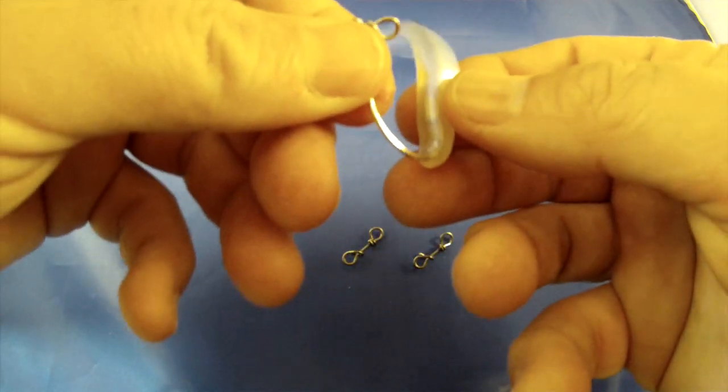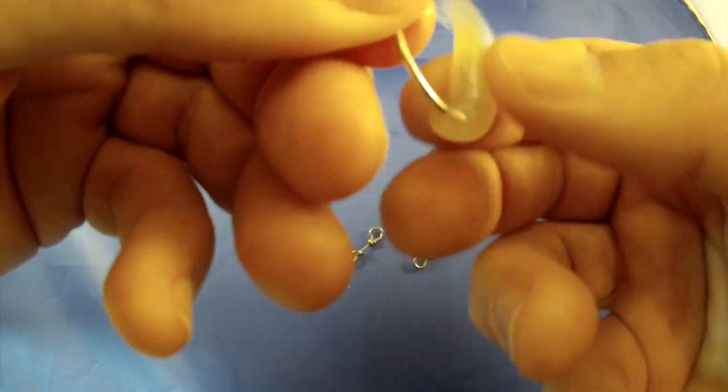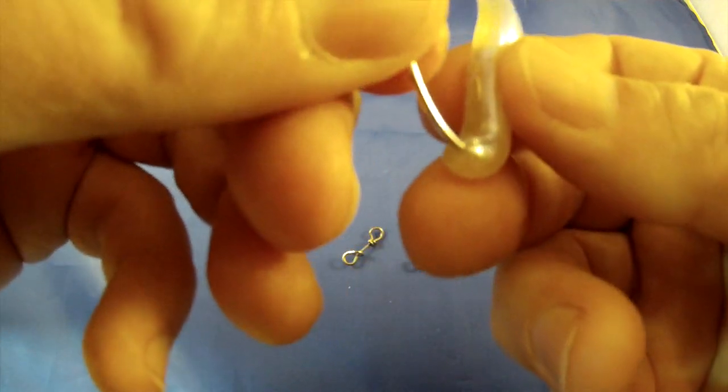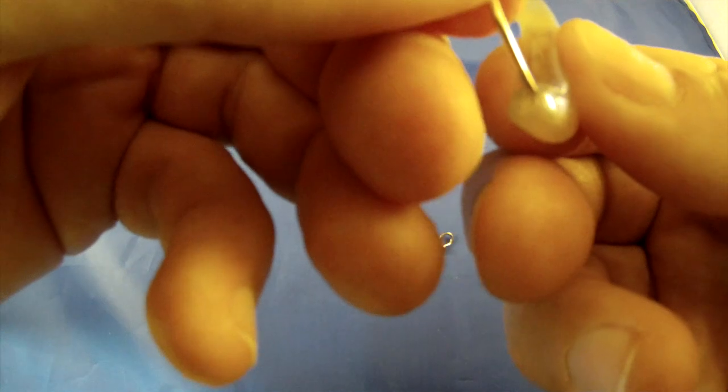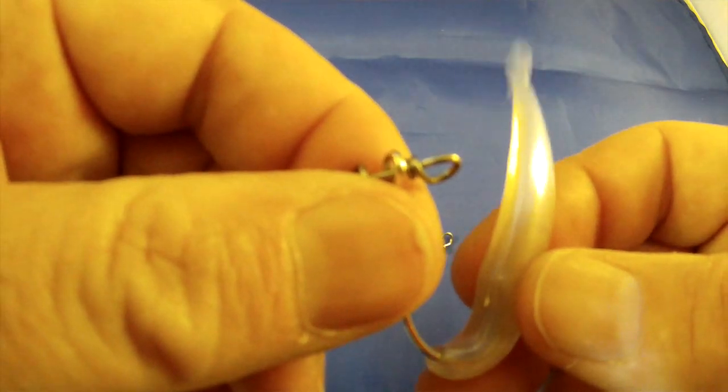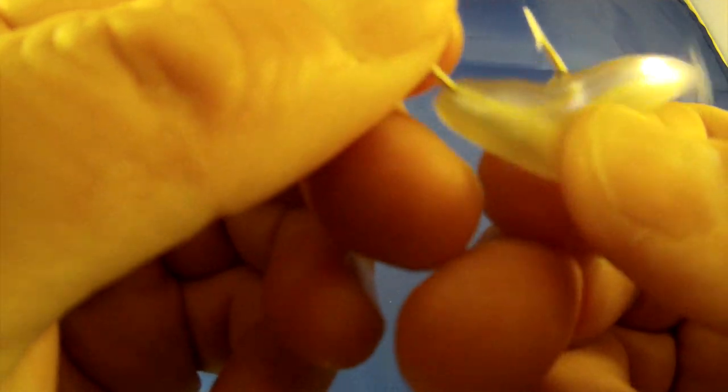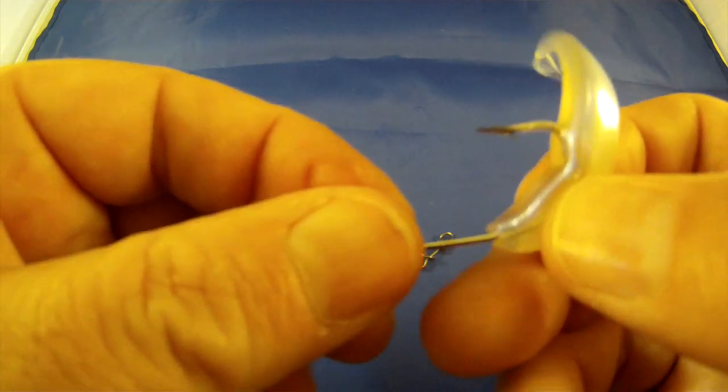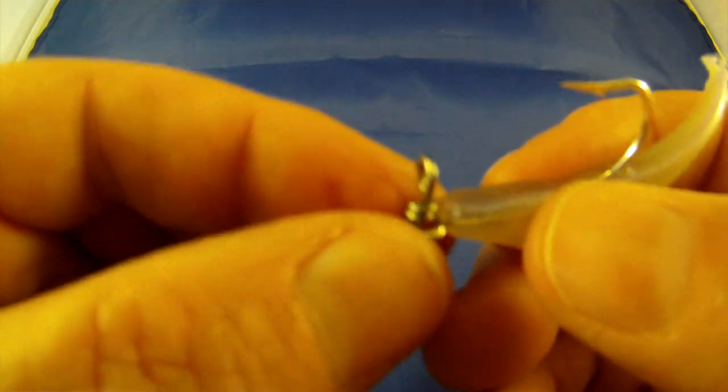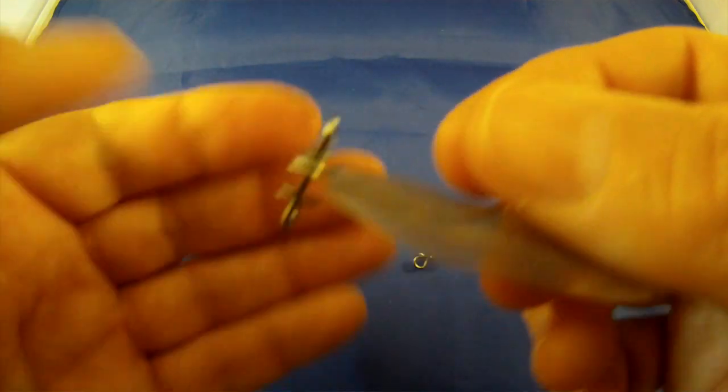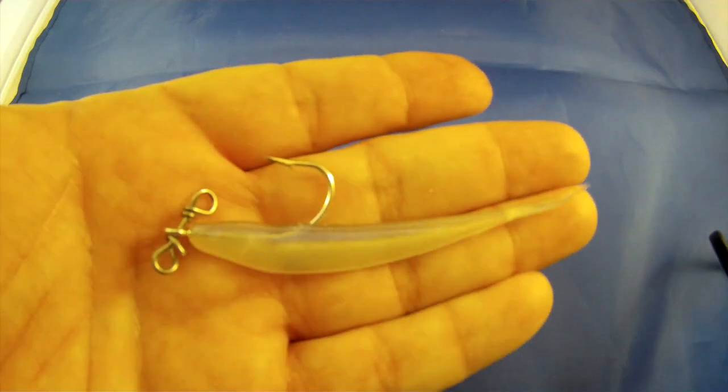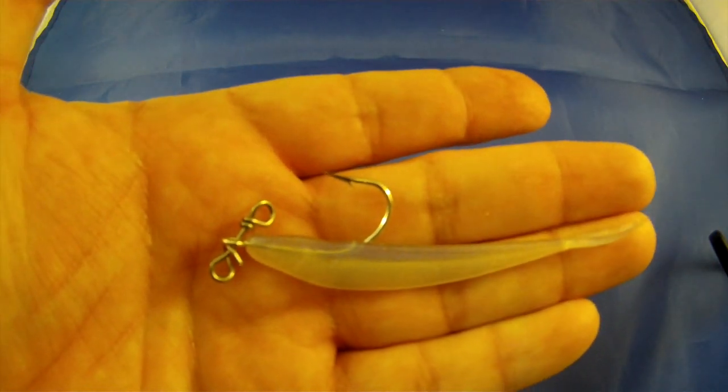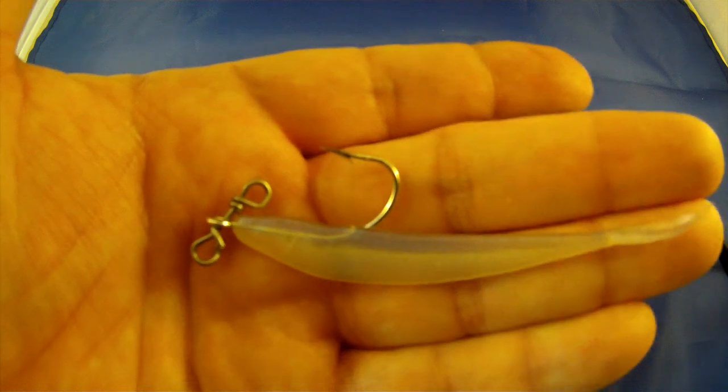And then what you're going to do is just thread this fluke on. Try to keep it in the middle. And then when I get to my tear, I'm just going to slide it down. So there it is.